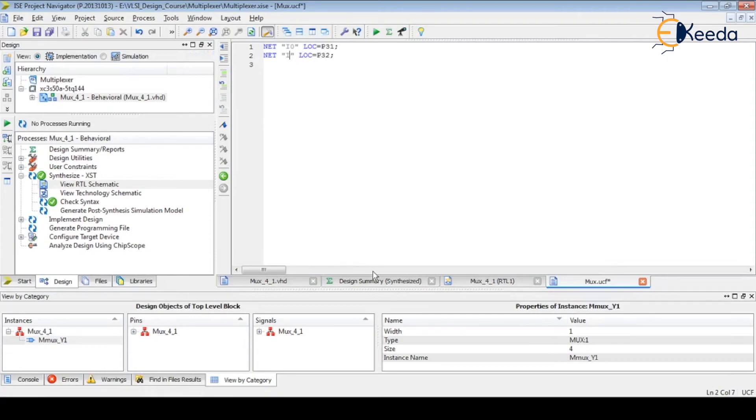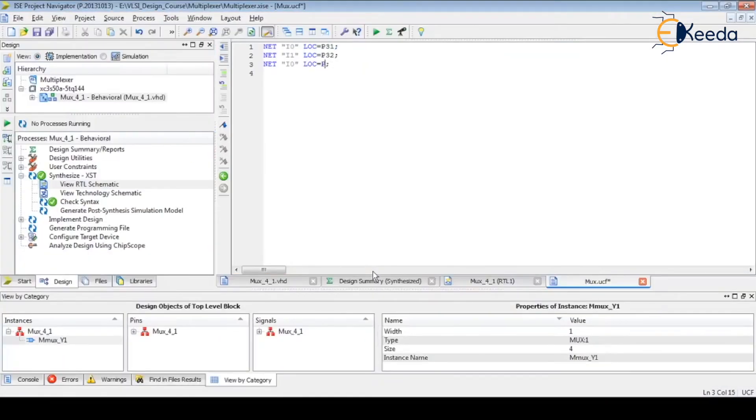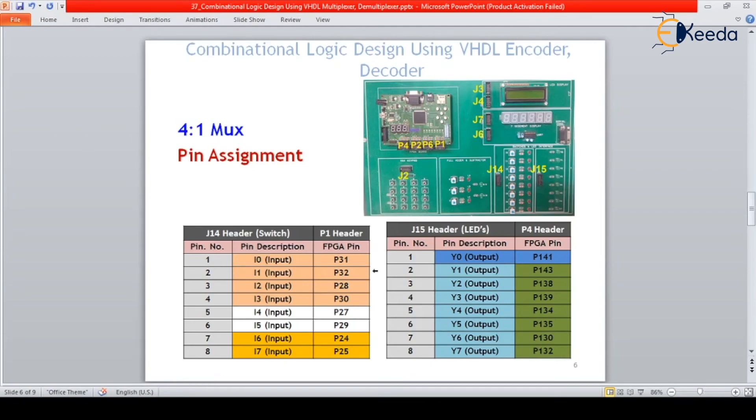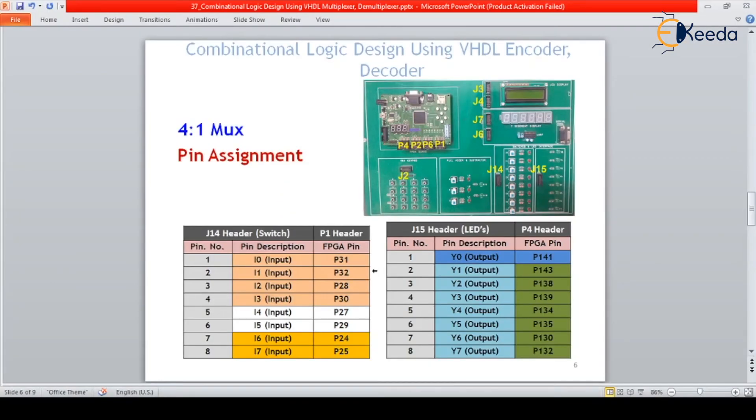So let's start writing a UCF for this four-to-one MUX. Everyone knows the syntax. Let's start. Syntax says net, then signal name is i0, first input, then location is equal to P31. Then i1, i2, i3. Let's copy it, paste it. P32 for i0, i1. Then P30, i0, i1, i2, i3.